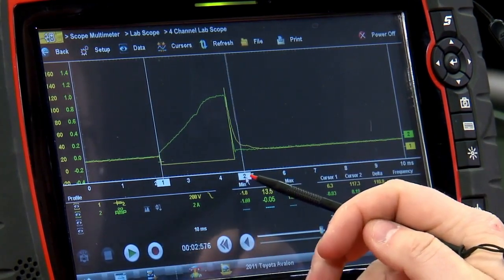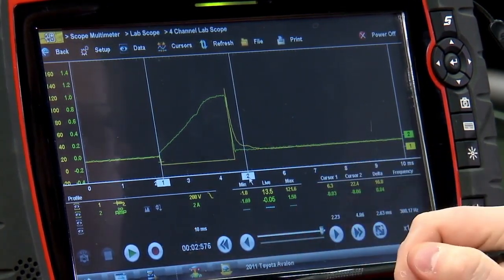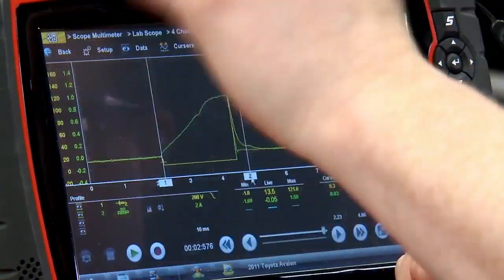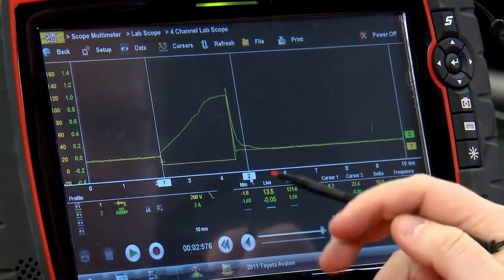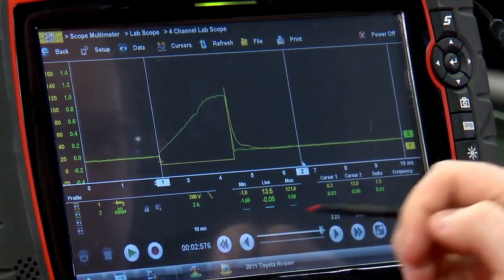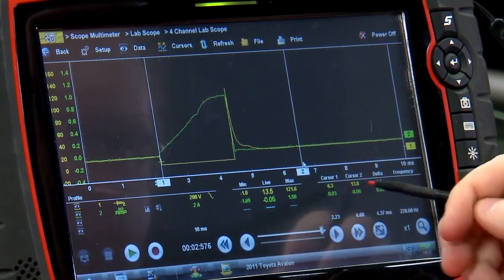And then over here, we're going to see another little bump. We'll call that coil oscillation. That's the voltage just ringing back and forth within that coil. And then the voltage should go back to about alternator voltage.